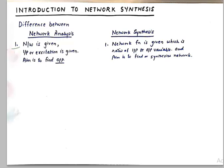If you've been watching my previous videos in the playlist, we were solving a lot of networks in order to find the currents in the network's branch or to find the power in a specified branch. When the network is given and an input or excitation is given and the aim is to find the output, that is known as network analysis. On the contrary, if a network function is given — and please understand the network function is the ratio of input or output variables — the aim is to synthesize or find the network.